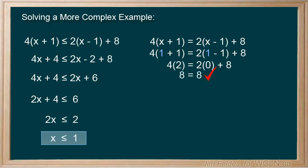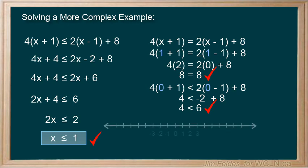Then pick any value less than 1, 0 is an easy choice, and plug it in. And we have 4 is less than 6, which proves that at least these two solutions are in fact true. To show the solution graphically, we can once again use the number line, and show the solution in interval notation.